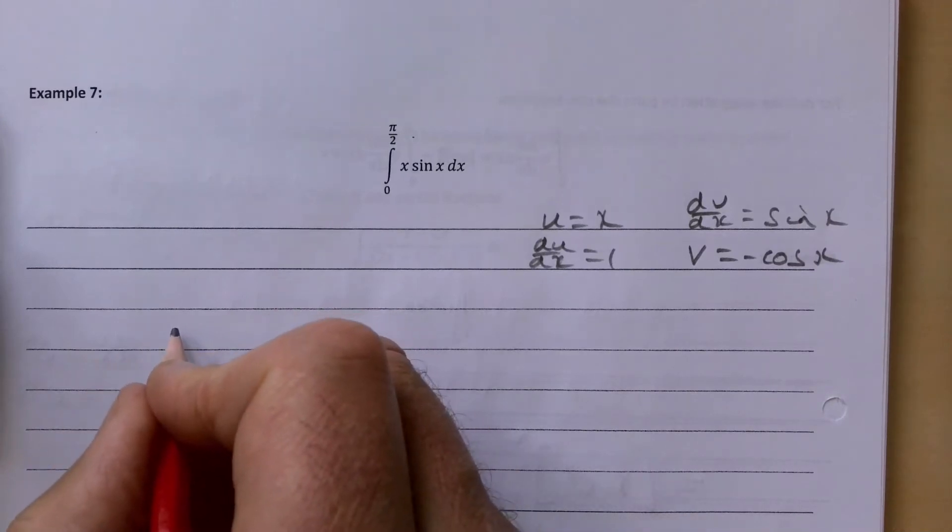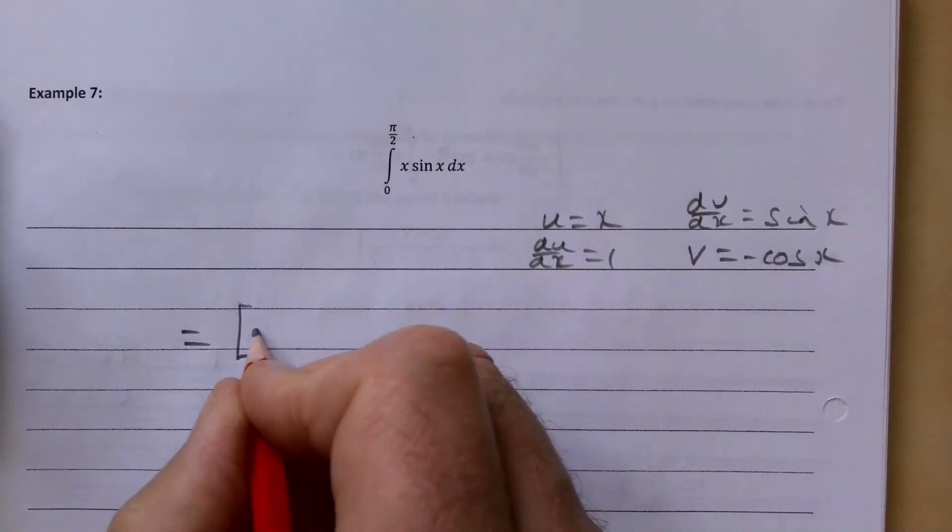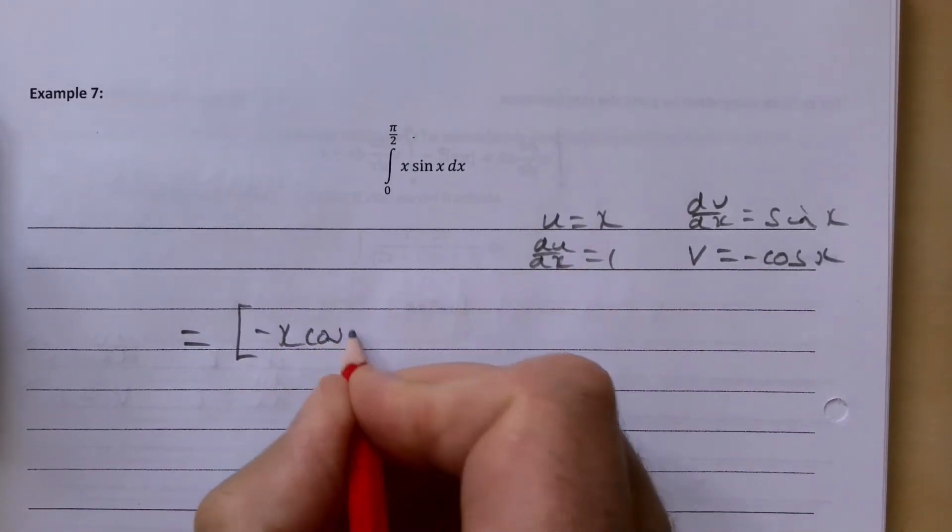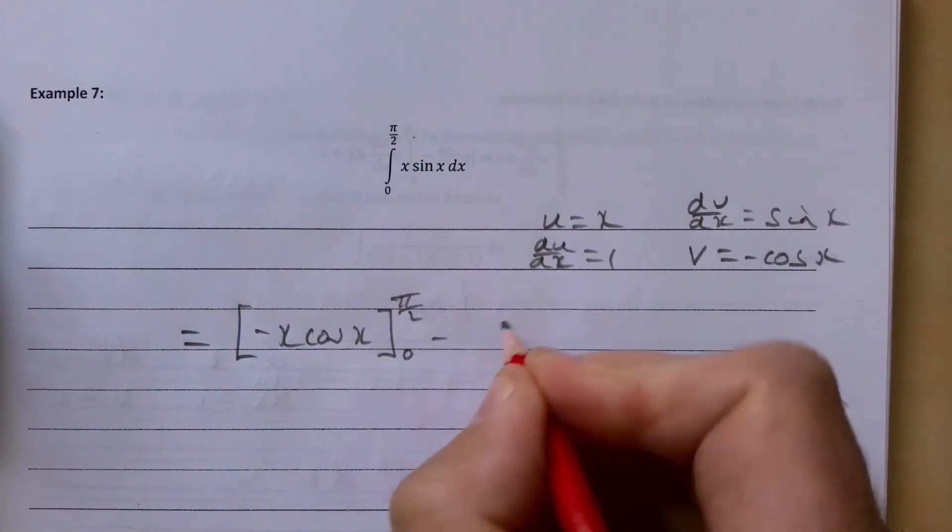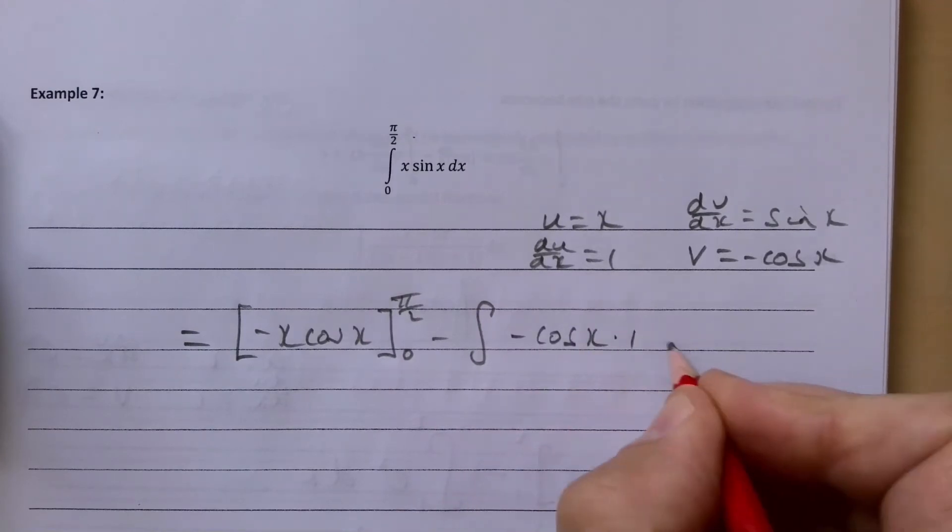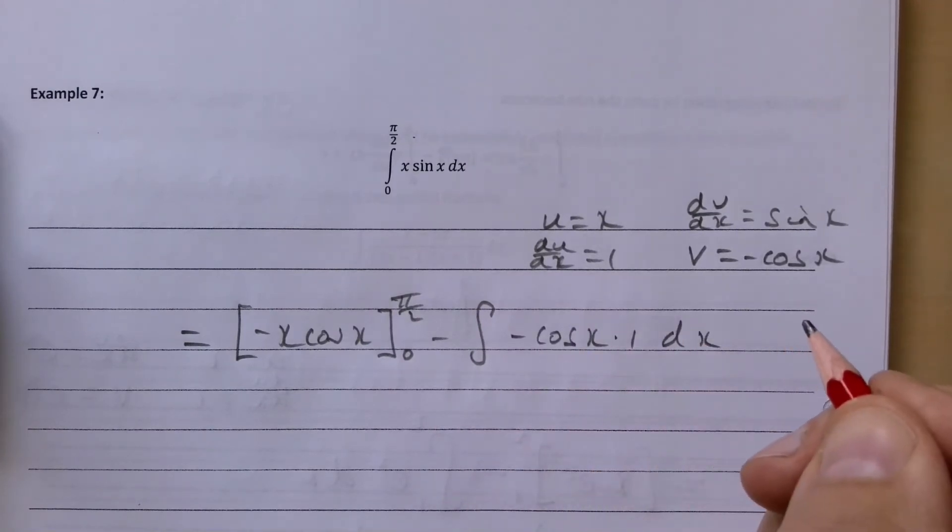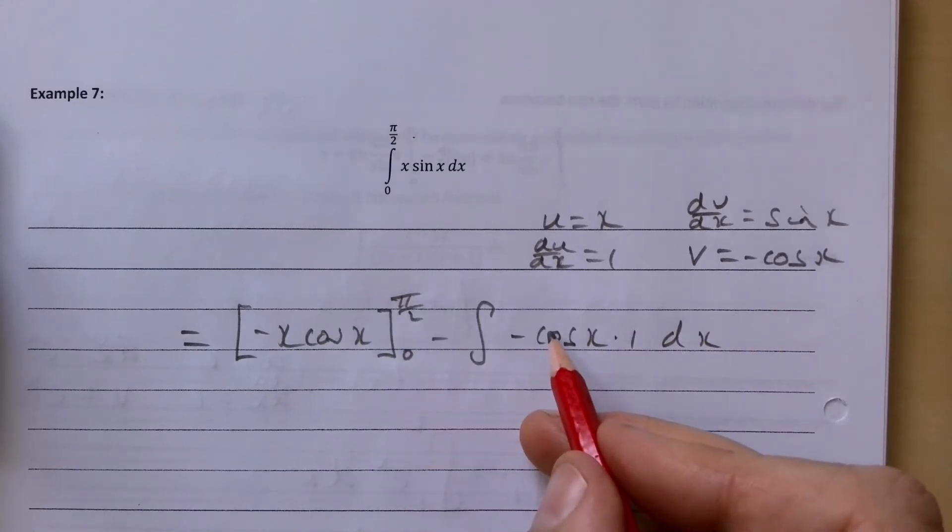So our integral then between 0 and pi over 2, our uv is minus x cos x, and that's again between pi over 2 and 0, take away the integral of minus cos x times 1 dx. If you have a plus there effectively, so the cos then will just go to the sin.